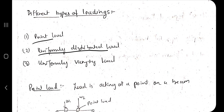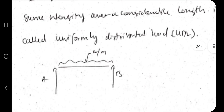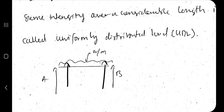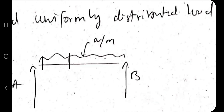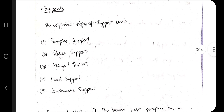You also need to know the different types of loadings: point load, uniformly distributed load, and uniformly varying load. A point load acts at a single point, like W1 and W2 on a beam A-B. A uniformly distributed load (UDL) has a uniform distribution, like W per meter — for example, 10 N/m equally distributed along the beam. A uniformly varying load (UVL) increases from low to high or decreases from high to low.